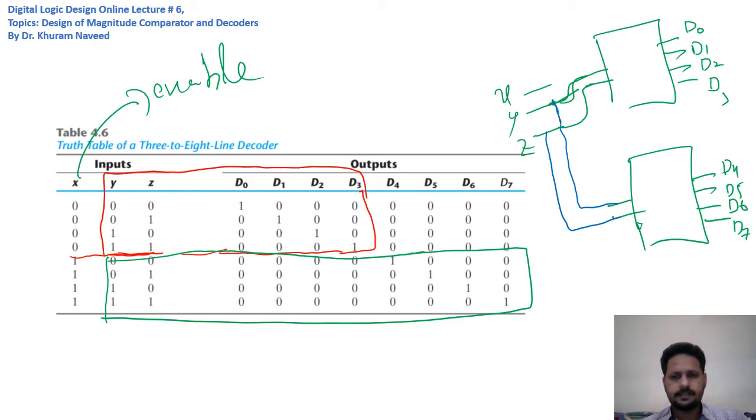Where x, as we already discussed, will be used as an enable. So it will be 0 in this case and 1 in this case.